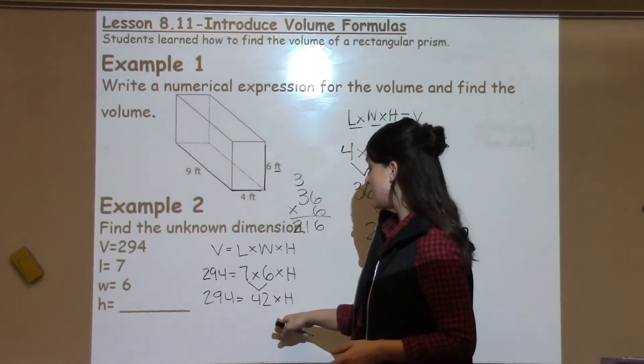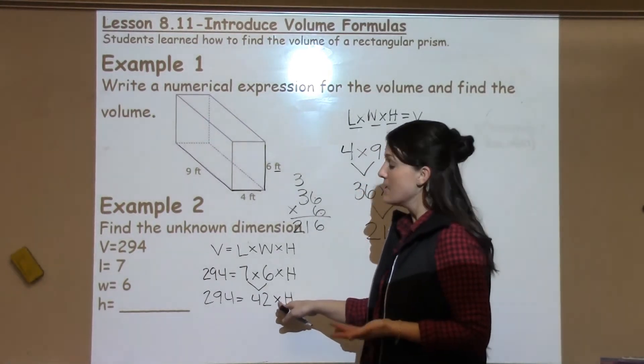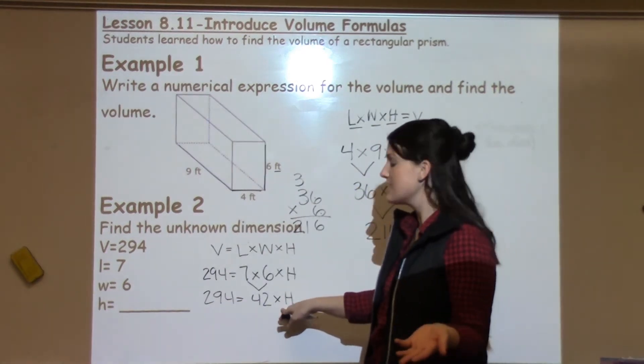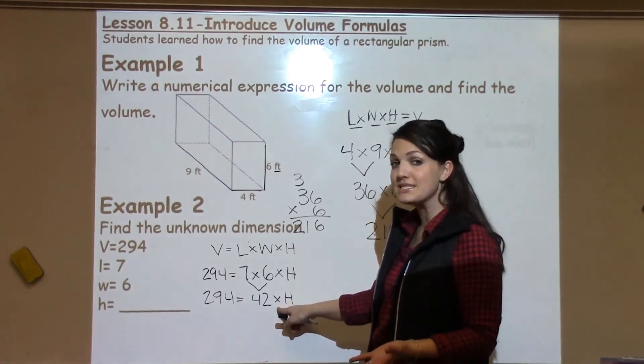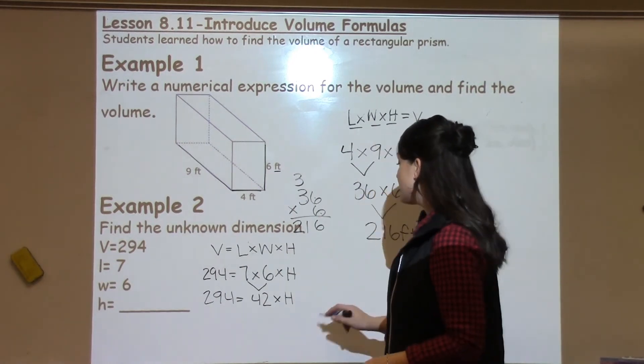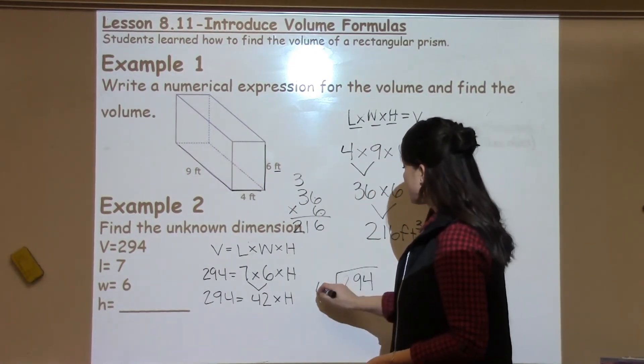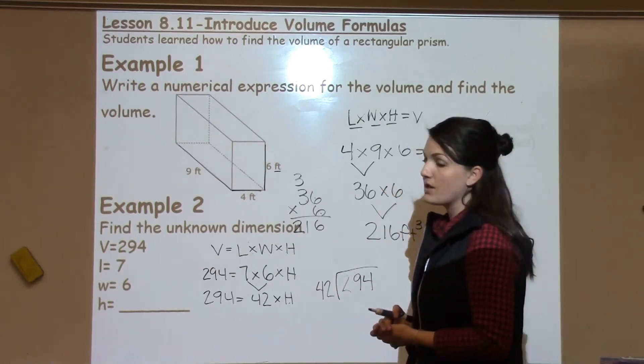I'm actually going to just do the opposite operation. So I see times, but I know I can't times these two amounts to find my height. That wouldn't make sense. So I need to do the opposite operation of times, which would be division. And I need to take 294 divided by 42 and that will give me my height.